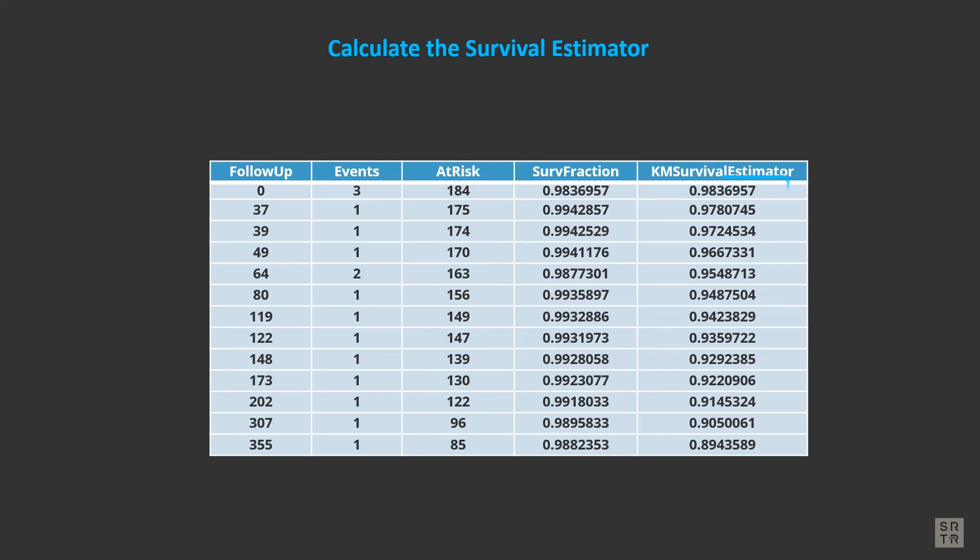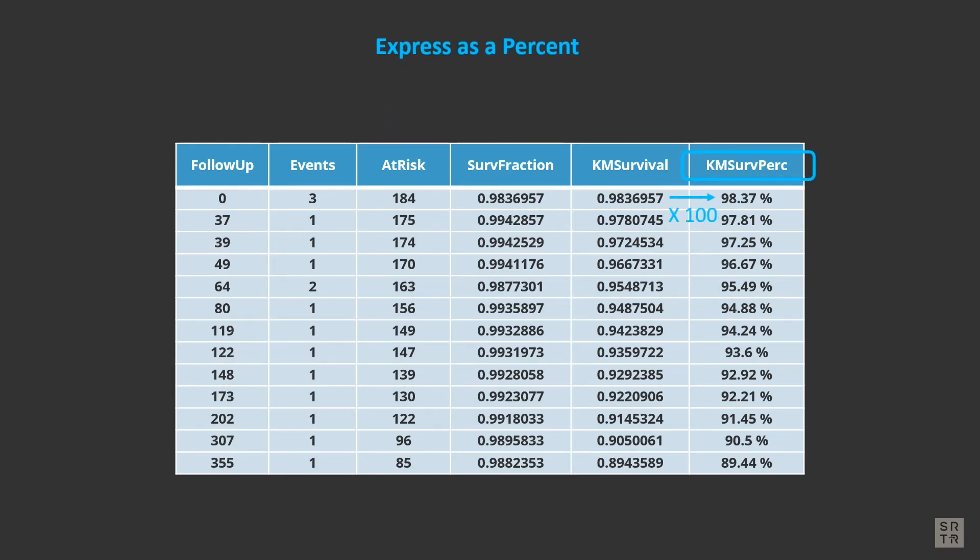The survival estimator at time zero is just the survival fraction at time zero. The survival estimator at time 37 is the survival estimator at time zero times the fraction at time 37. The survival estimator at time 39 is the estimator at time 37 times the fraction at time 39, and so on. So the survival estimator at one year is all the survival fractions multiplied together. To express this survival as a percent, multiply by 100. The last percent in the last row, last column, is what would appear in your PSR in table C6D.